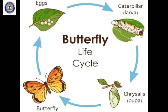The butterfly lays eggs on leaves. These eggs hatch and young ones called larva or caterpillar come out. The caterpillar sheds its skin several times so that it can grow. As soon as the caterpillar is done growing and has reached its full size, it forms itself into a pupa — a protective layer.